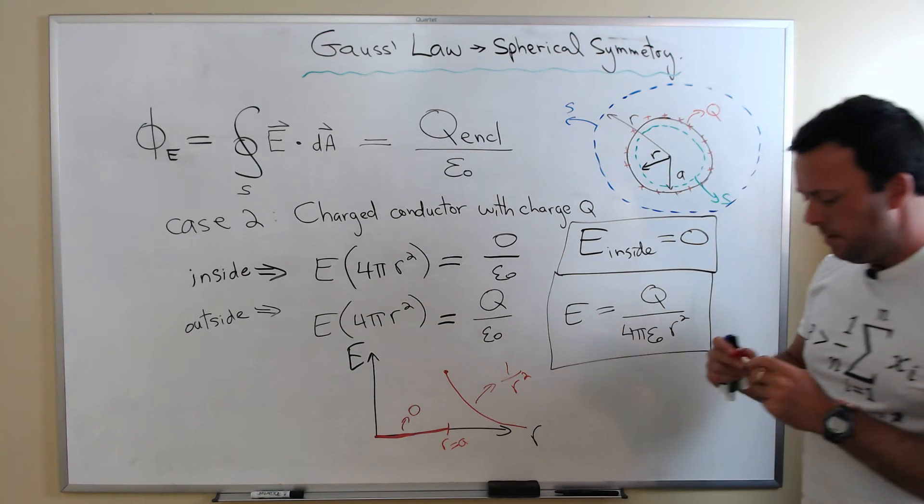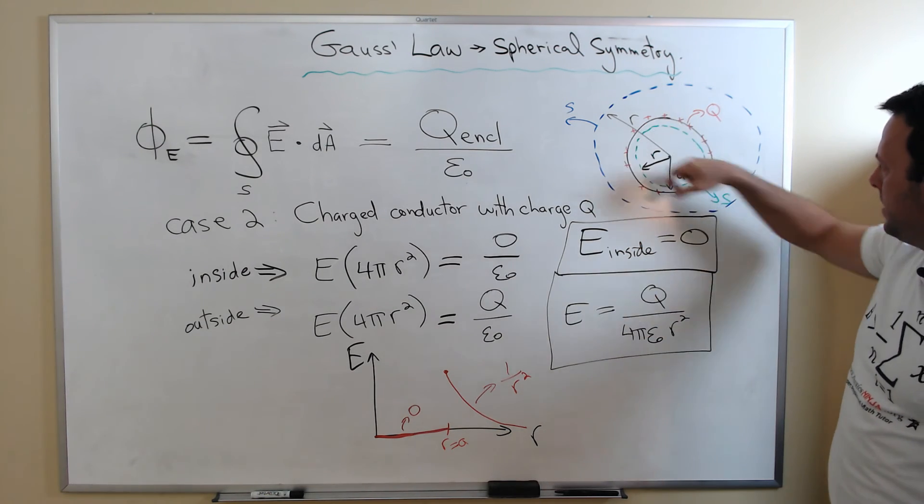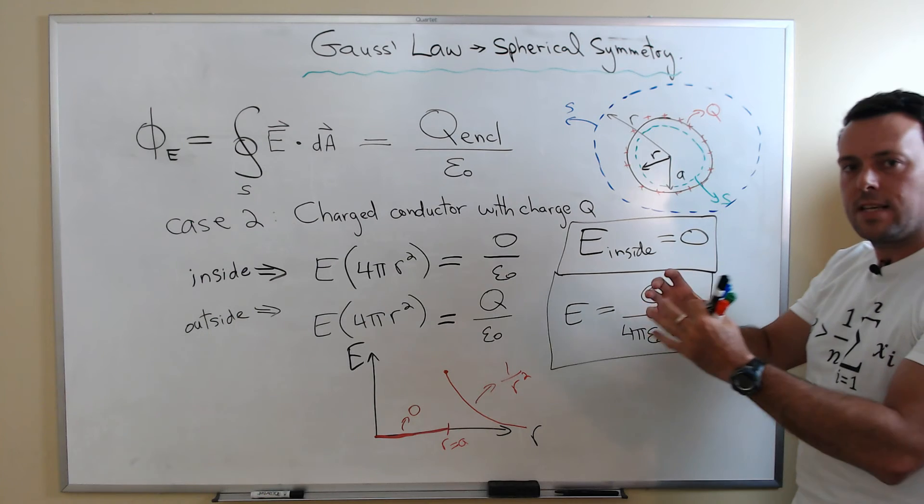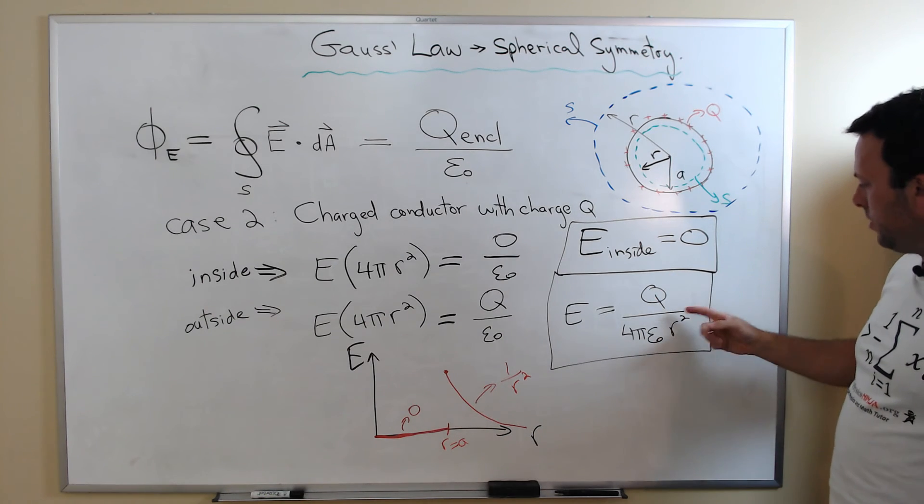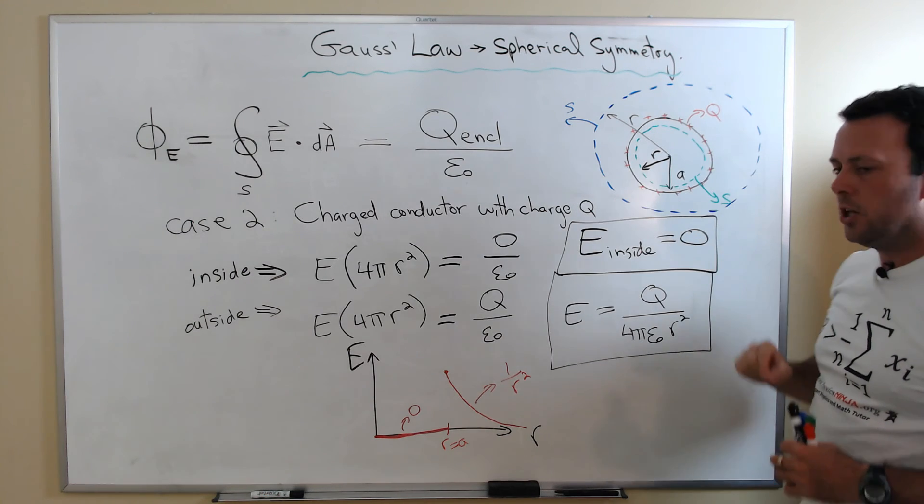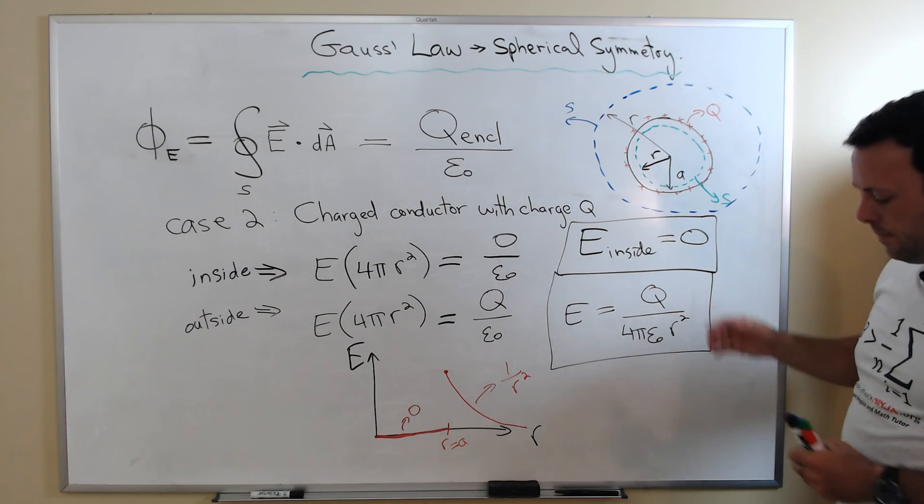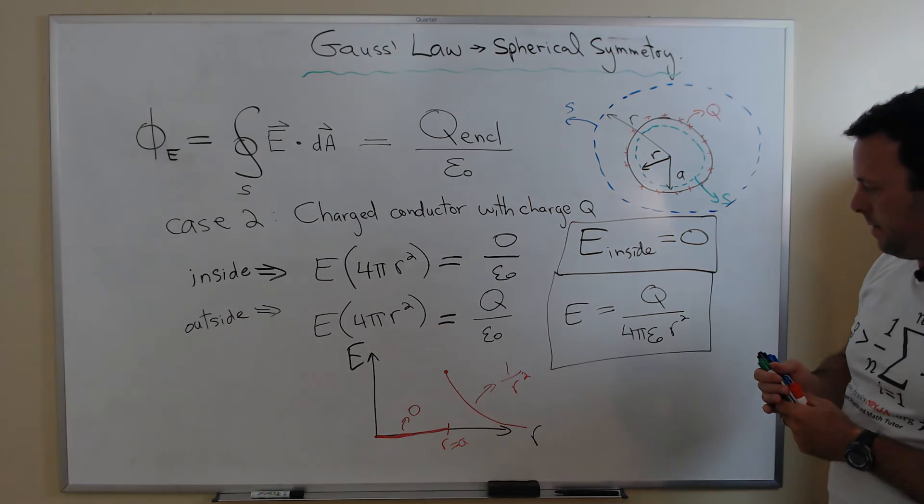So outside the conductor, the field produced by this finite-sized object looks exactly like that of the point charge where all the charge is located at the center. It's kind of a remarkable result. That's true. PhysicsNinja.org